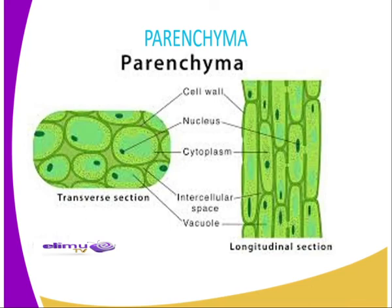The parenchyma tissues consist of special thin-walled, irregular-shaped cells. As you can see, our cells are very irregular — that is for the parenchyma tissues — and they form packaging and storage sites. The main function of the parenchyma tissues is that they are used as storage sites.